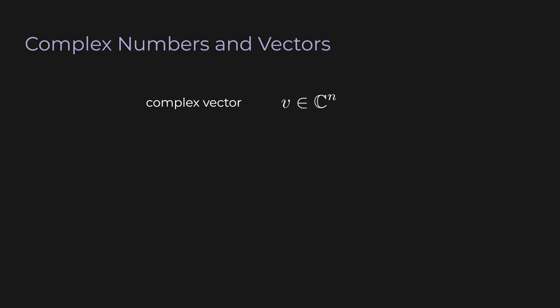You can easily extend this to vectors. A vector with n elements, each of which is a complex number, has a conjugate that is just the vector with each element conjugated. If you add a complex vector and its conjugate together, you end up with twice the real part of the vector. The dot product of a complex vector and its conjugate is twice the norm of the vector squared. Since the complex conjugate of a real number is just the same number, if you plug in a real vector you get the familiar formula that the dot product of a real vector with itself is the square of the norm.